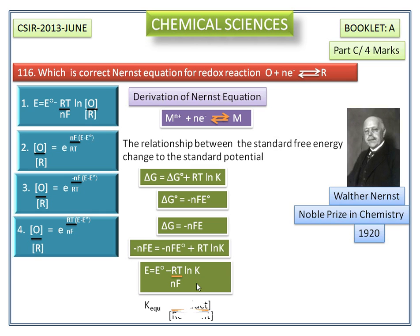We know that K equilibrium is the concentration of product divided by concentration of reactant. We introduce this value in this equation. We get E equals E° minus RT divided by nF, ln concentration of product divided by concentration of reactant.